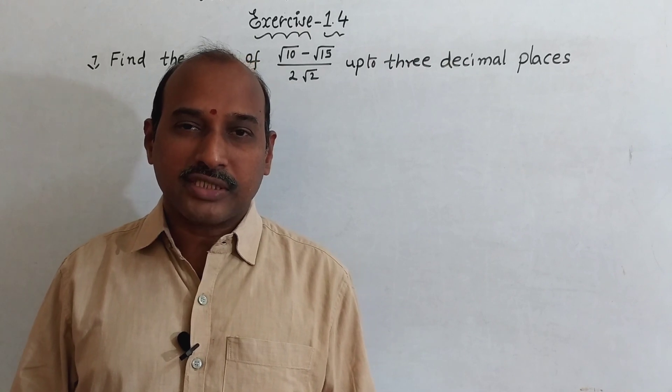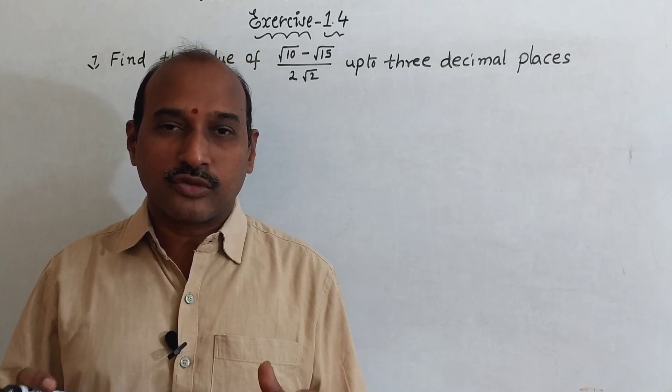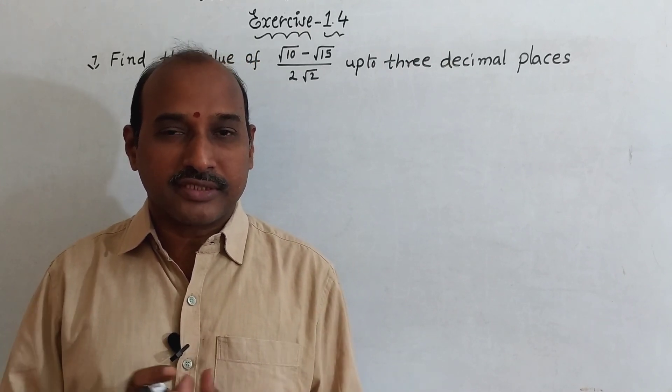Exercise 14, question number 3: Find the value of root 10 minus root 15 by 2 root 2, up to 3 decimal places.